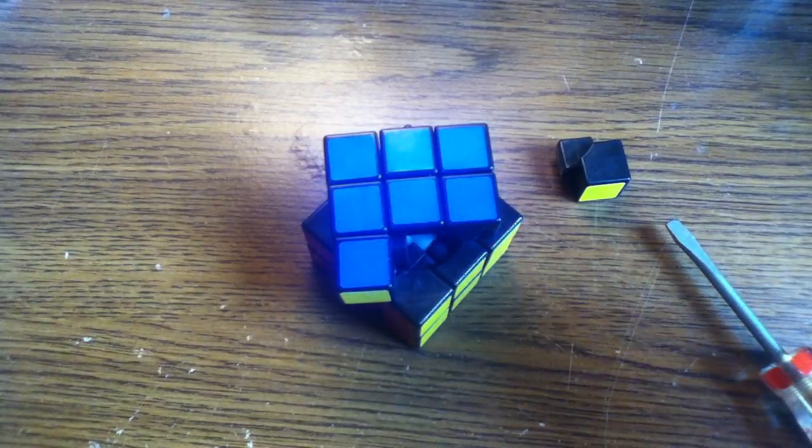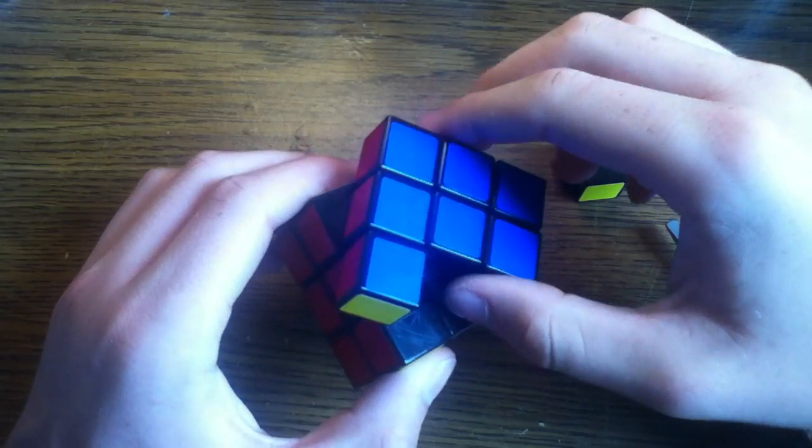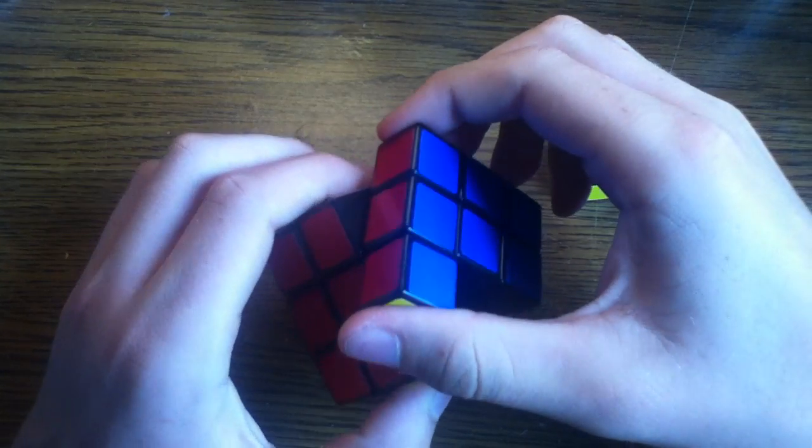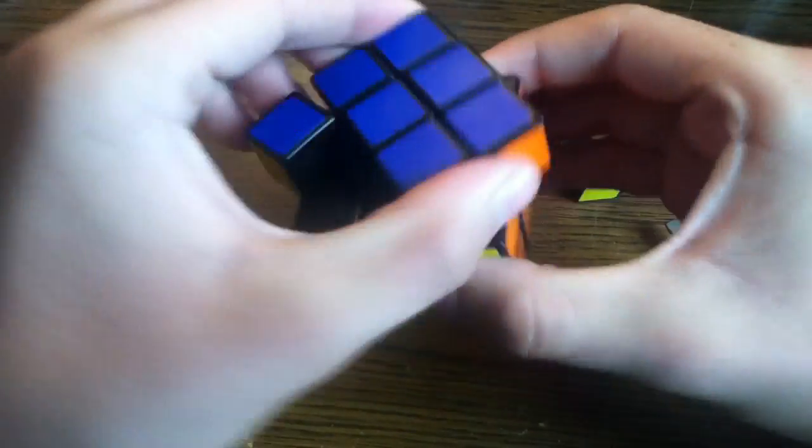A common misconception with solving a 3x3 Rubik's Cube is that you solve it one side at a time. But actually, when you solve a 3x3 Rubik's Cube, you solve it by layer. This whole section right here is a layer.